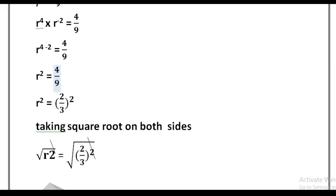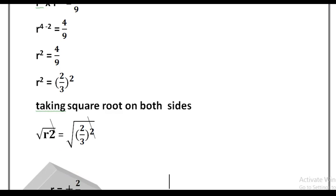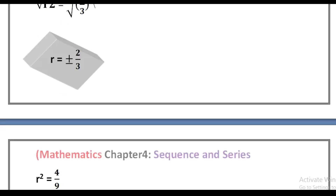The square root of r² gives r, and the square root of 4/9 gives 2/3. So r is equal to plus or minus 2/3.